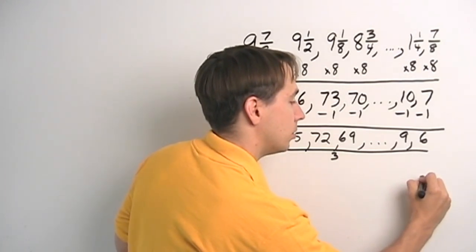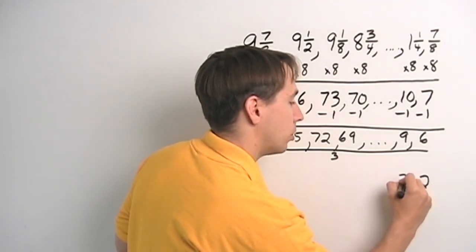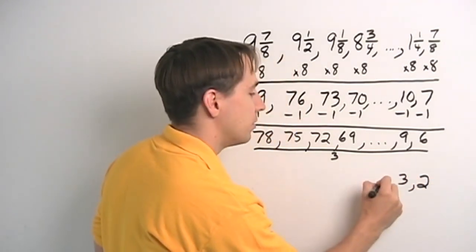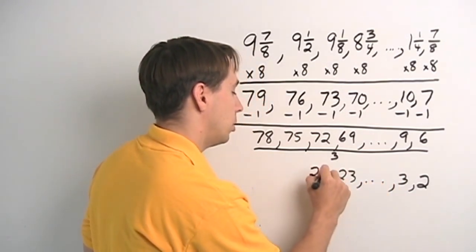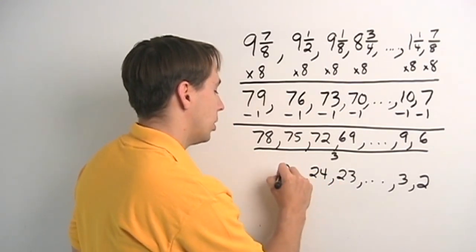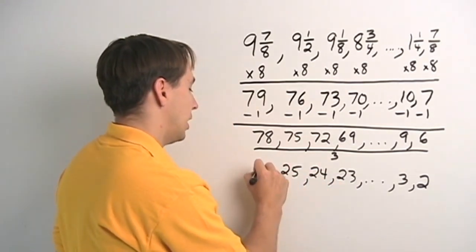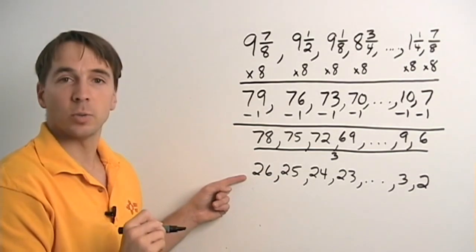And we have our new list. 2, 3, 4, 5, 6, 1 up to 23, 24. And now you see where we're going. 25, 26. And this is a list we know how to deal with.